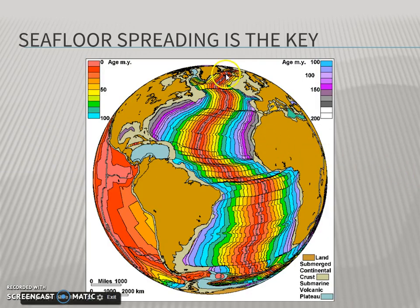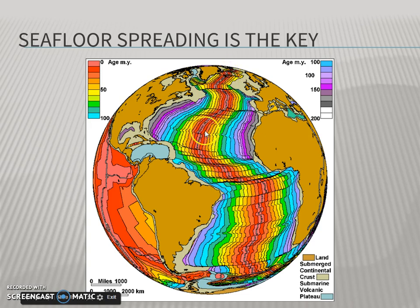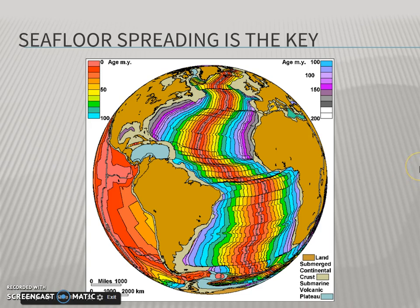By dating the rocks that make up the ocean floor, we uncovered that rock close to the volcano — in the middle of the seam running through the Atlantic Ocean — is much younger, while rocks on the far edges, farthest away from the volcano, are the oldest. Therefore, the seafloor is spreading.